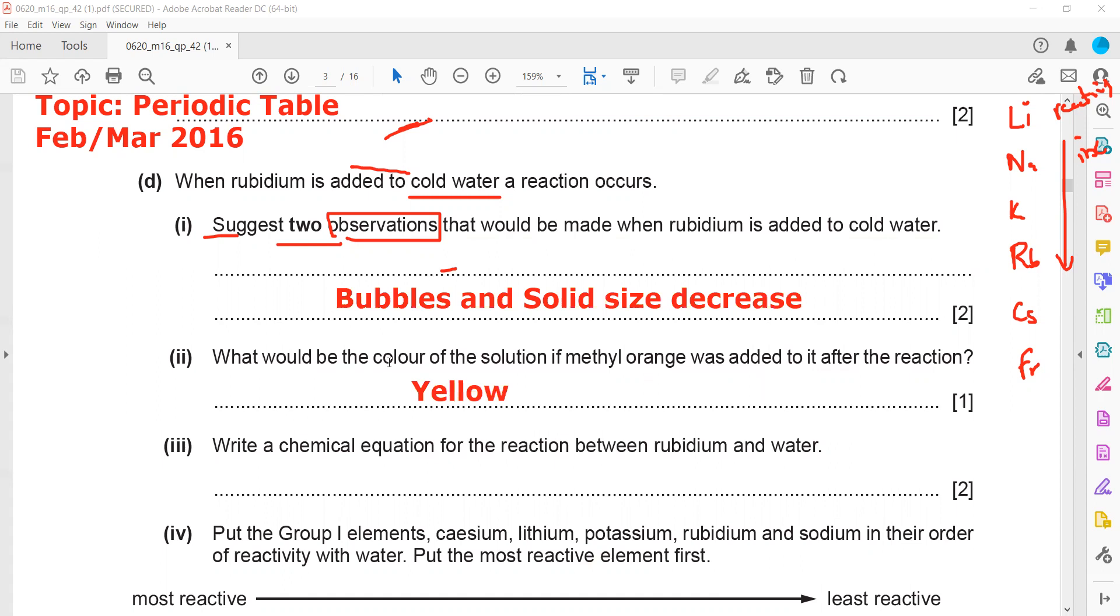If it was an acidic solution, then methyl orange would be red. Otherwise, orange will be there. Then write the chemical equation for the reaction between rubidium and water.